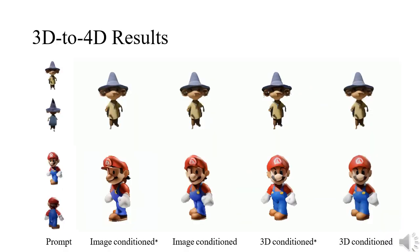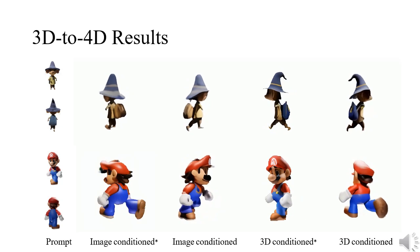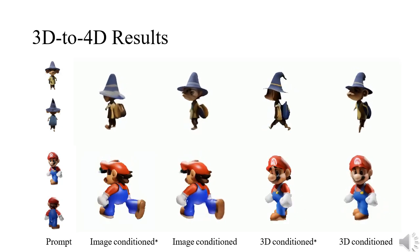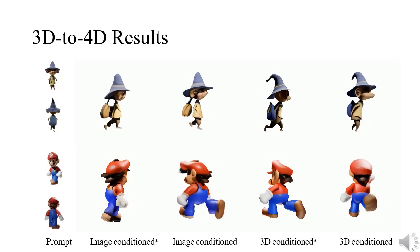For 3D to 4D generation, we show outputs from our image conditioned model, whose prompt is the first view single image, and outputs from our 3D conditioned model, whose prompt is orbital views of static 3D assets.